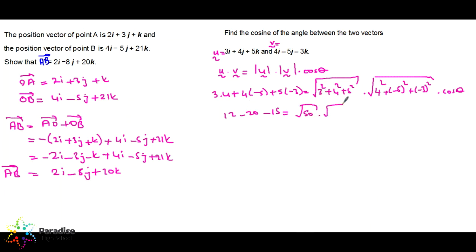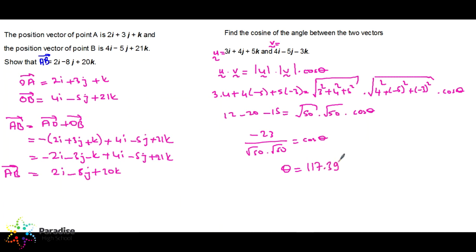So we have: −23 = √50 × √50 × cos θ, which gives −23 = 50 cos θ, therefore cos θ = −23/50. Taking inverse cosine, the answer is 117.39 degrees. All right, let's move on to the next question.